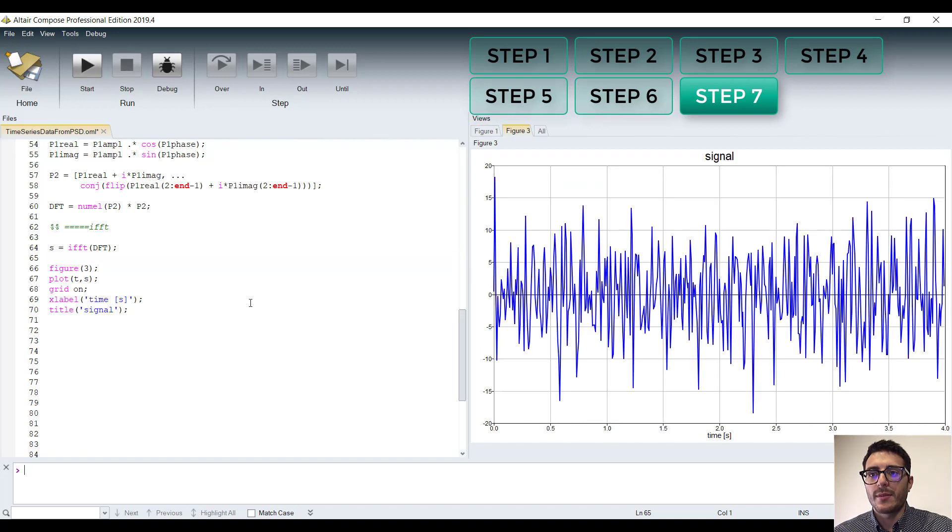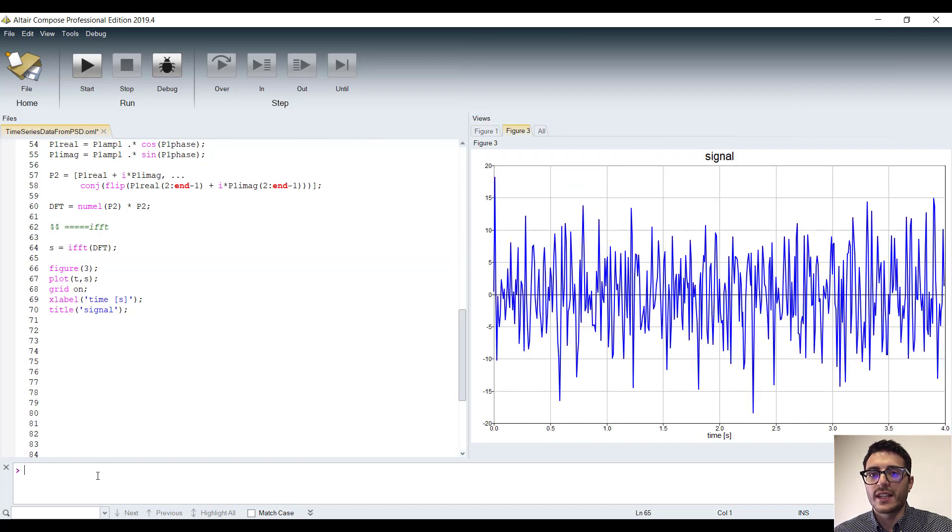We can see that the time length is the one that we have set at the beginning. And also, the sample time is coherent with the sampling frequency we set. Now, we can check if the implementation of the algorithm is correct by computing the power spectral density of this time signal.